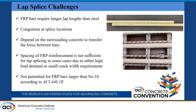Lap splicing is a traditional and conventional method, but it is not applicable or practical in many applications. For example, in the case of FRP bars, because FRP bars need longer development and lap lengths than steel bars, using lap splicing can cause congestion at the spliced location. Also, the spacing of FRP reinforcement is sometimes not sufficient for lap splicing due to high load demand or small crack width requirements, and some design codes do not permit lap splicing for large bar sizes.